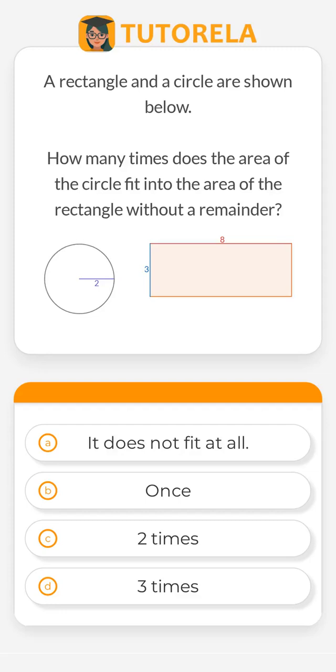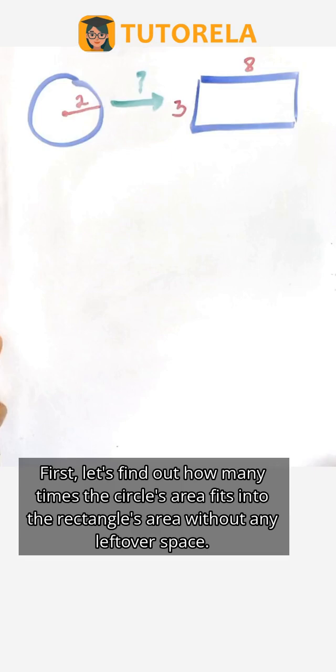How many times does the area of the circle fit into the area of the rectangle without a remainder? First, let's find out how many times the circle's area fits into the rectangle's area without any leftover space.